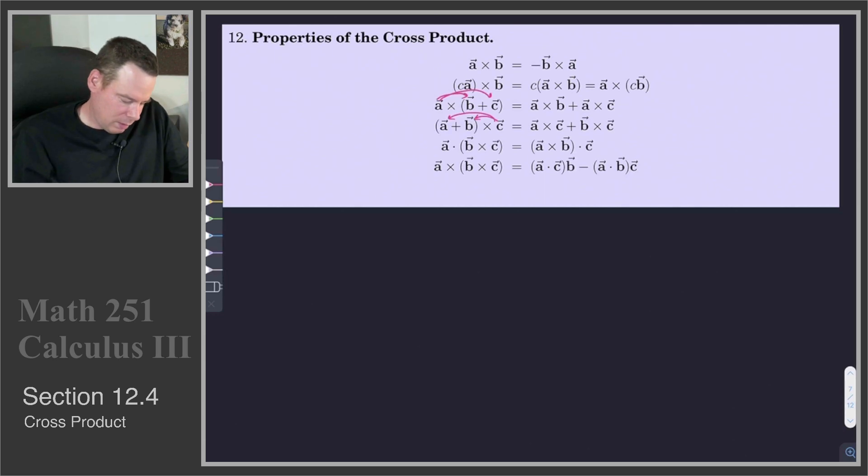This is known as the scalar triple product. So this is a scalar triple product. It's a product of three vectors, which is why we have the word triple product there. And the result is a scalar, because the last operation is a dot product which produces a scalar.